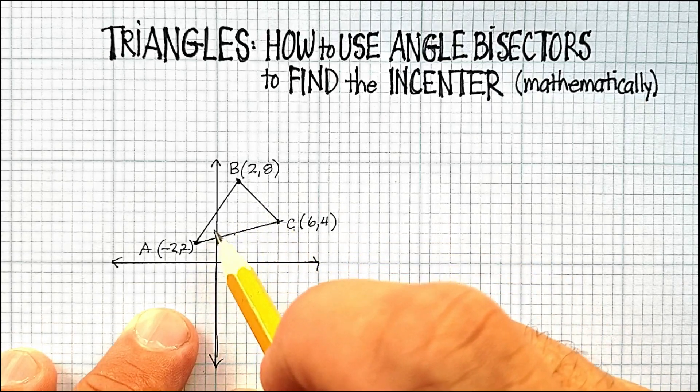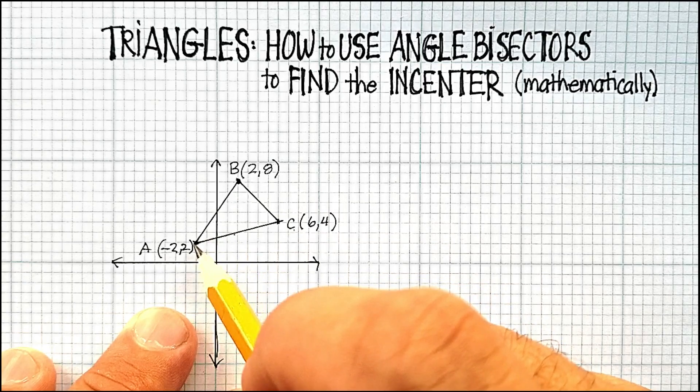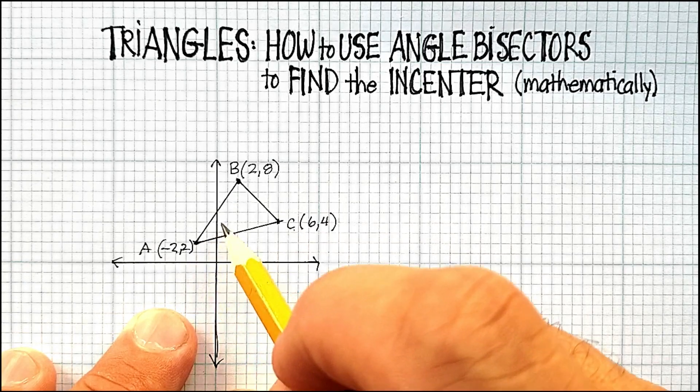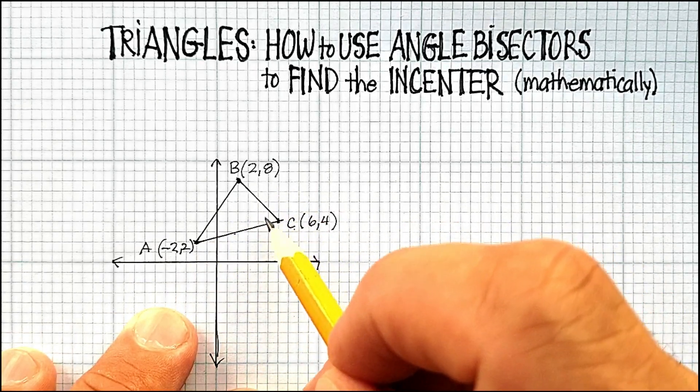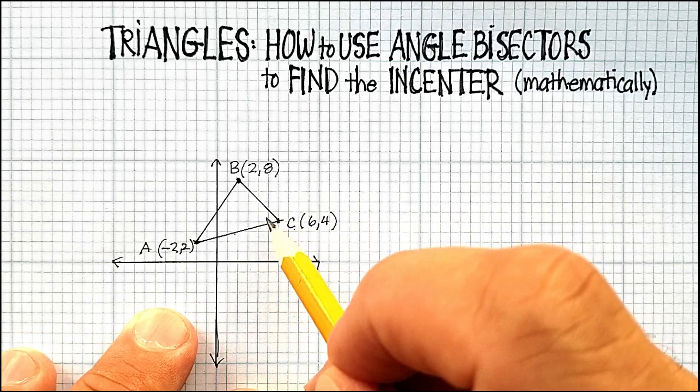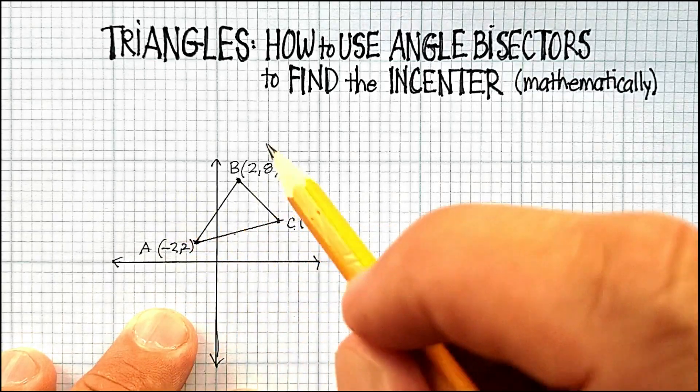So if I were to measure this angle, let's just say it was 60 degrees, I would create a 30 degree angle and just draw the line straight through. Same thing with the side, go exactly down the middle, do a line that goes straight across.